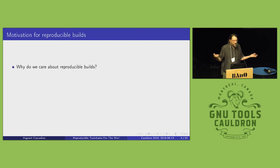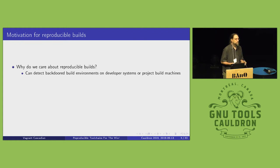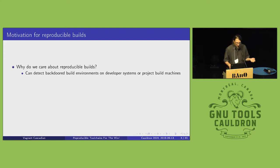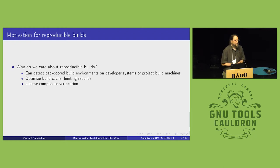Why does reproducible builds matter? There are a number of reasons. One thing it's really useful for is you can detect backdoors in your build environments, or if you're building software on a developer machine, you can look for weird things. If normally the build result doesn't come out identical, it doesn't set up any red flags. This also optimizes build caches like ccache — the more reproducible things are, the faster rebuild times you can have. And since this is a GNU event, license compliance verification actually becomes a lot easier with reproducible builds.